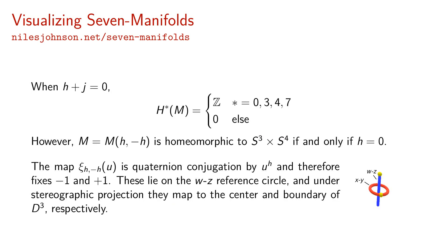When H plus J equals zero, the total space M has the same integral cohomology groups as S3 cross S4. However, M(H, -H) is homeomorphic to S3 cross S4 if and only if H equals zero. C(H, -H) of U is quaternion conjugation by U to the H, and therefore fixes minus one and plus one. These lie on the WZ reference circle and under stereographic projection, they map to the center and boundary of the three-ball, respectively.